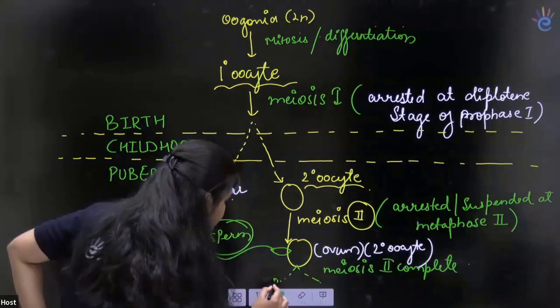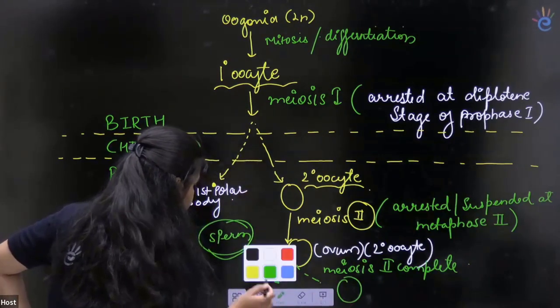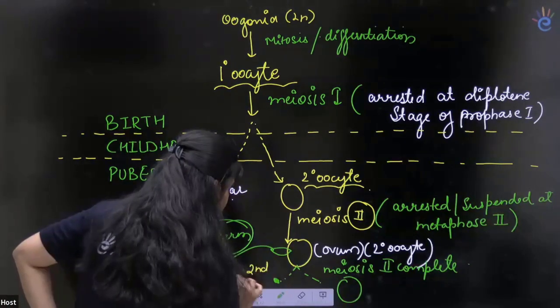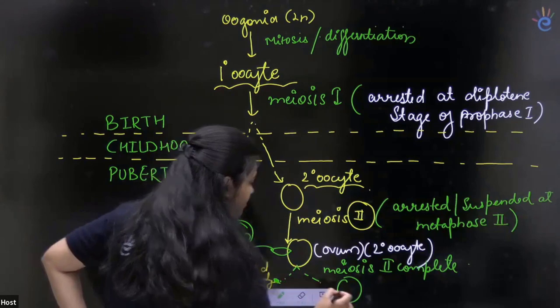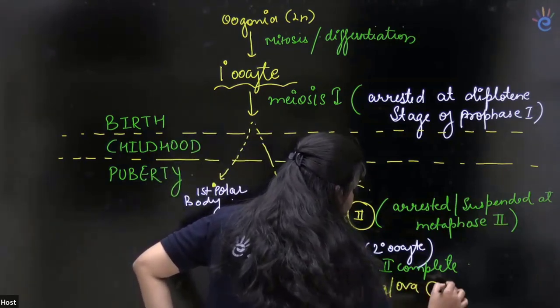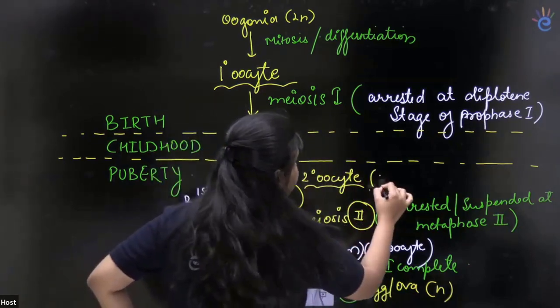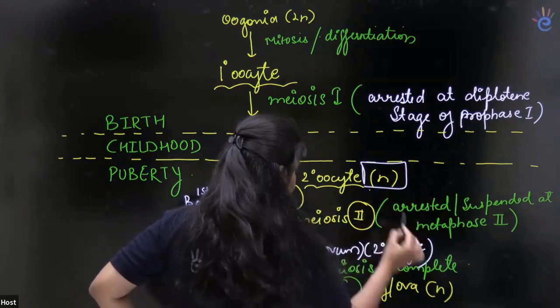This is a polar body. This is a second polar body which will degenerate. And this is the egg or ovum. This is haploid level. The haploid level starts from the secondary oocyte.